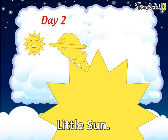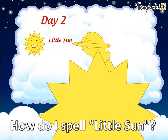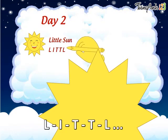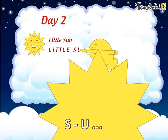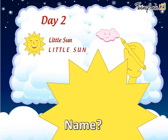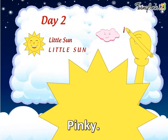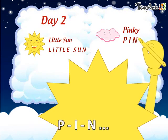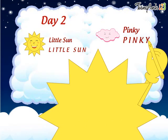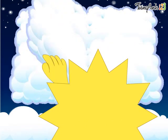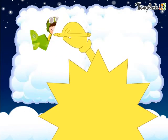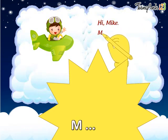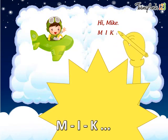Name. Little Sun. How do I spell Little Sun? L-I-T-T-L-E S-U-N. Name. Pinky. How do I spell Pinky? P-I-N-K-Y. Hi, Mike. M-I-K-E.